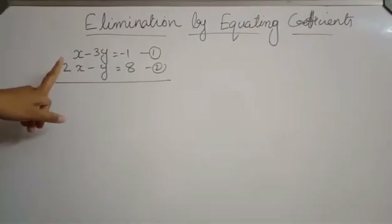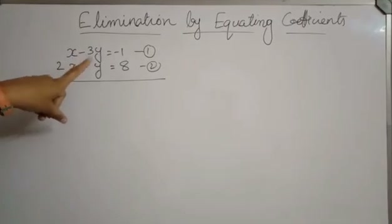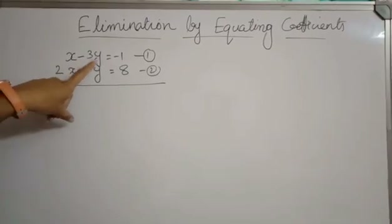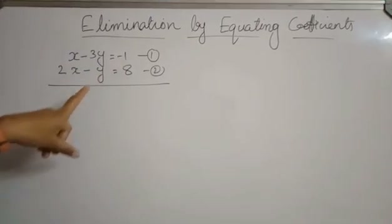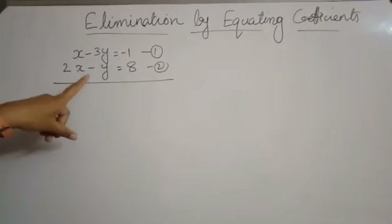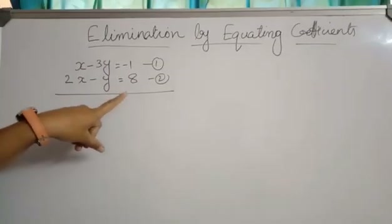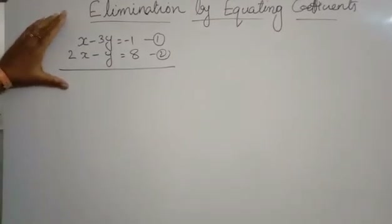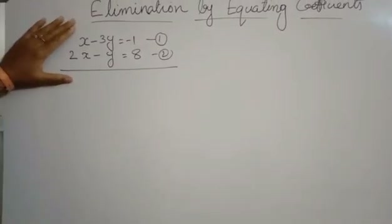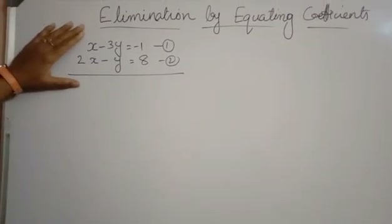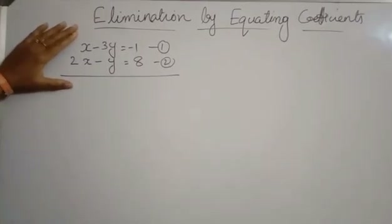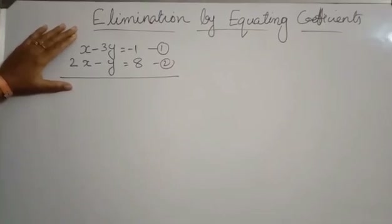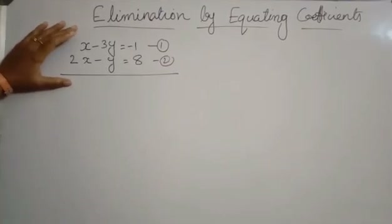Consider the two algebraic expressions: x minus 3y is equal to minus 1, and 2x minus y is equal to 8. Let's see how to simplify this by elimination by equating the coefficients.